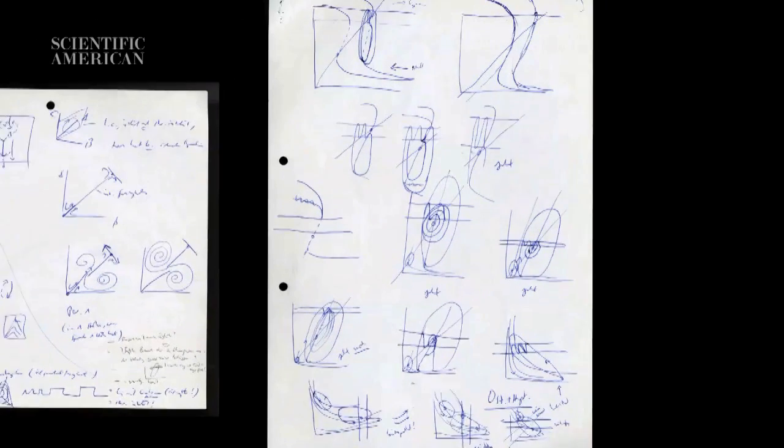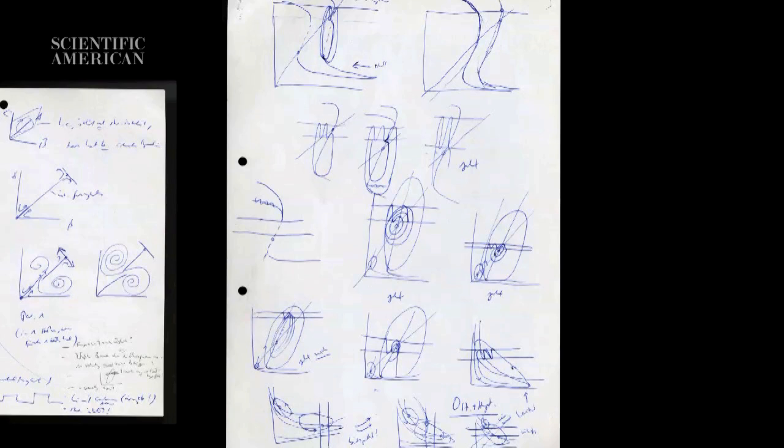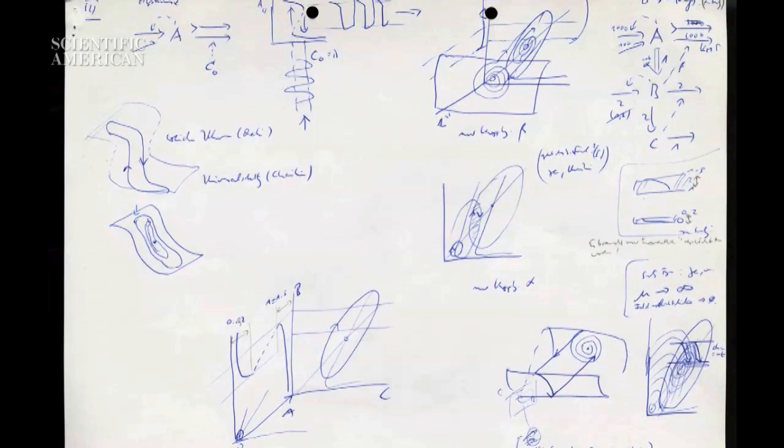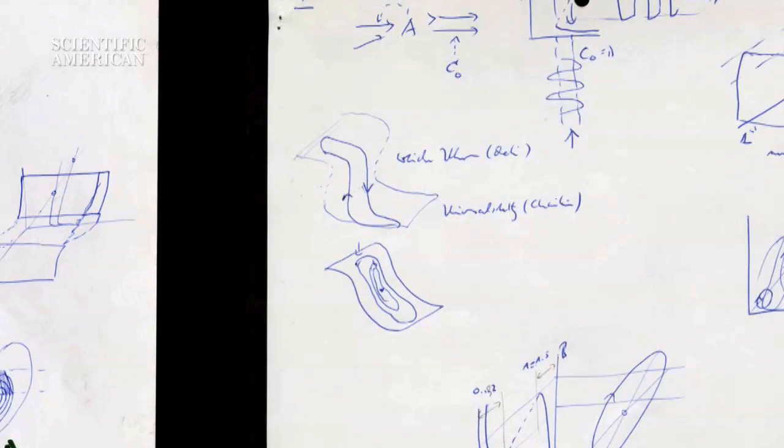By drawing and redrawing, Rössler changes the shape. Here, he writes soft watches in German, drawing inspiration from a famous painting by Salvador Dalí. Rössler also visualized the system jumping between two sheets of paper.